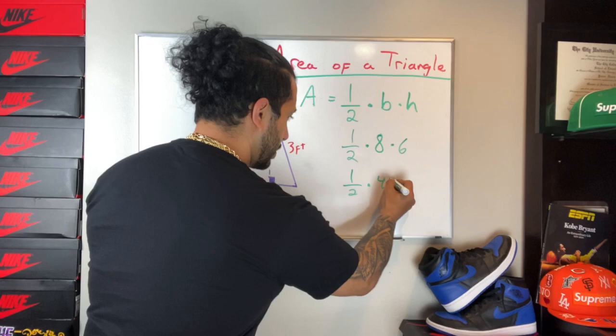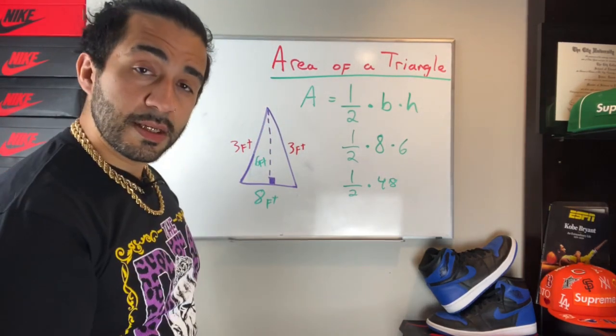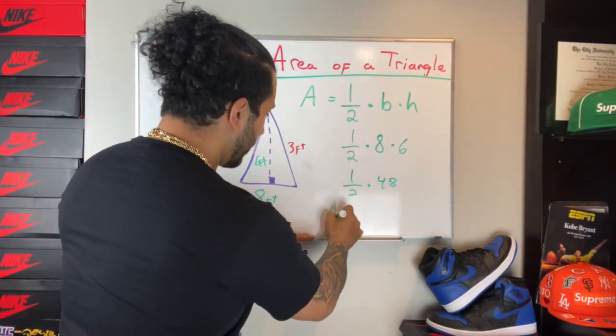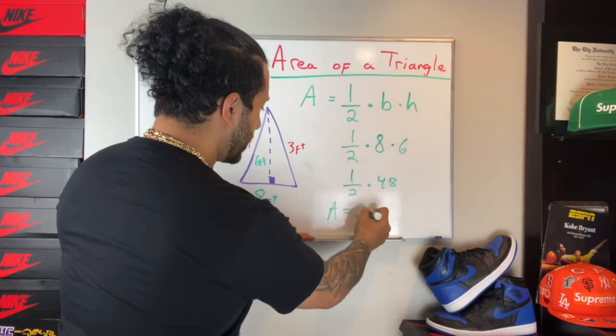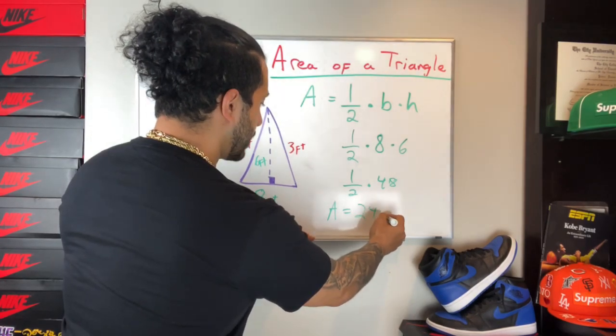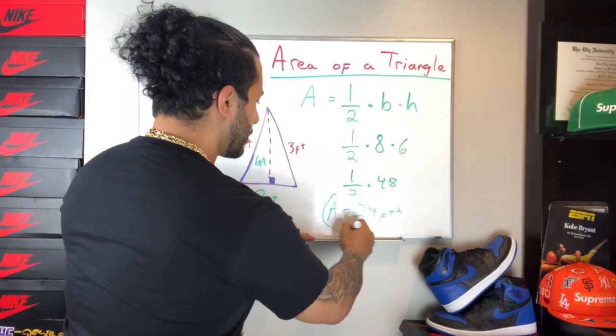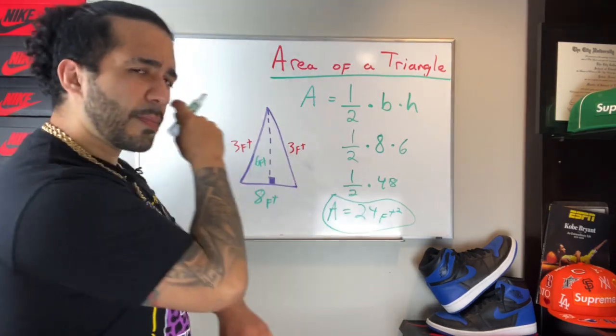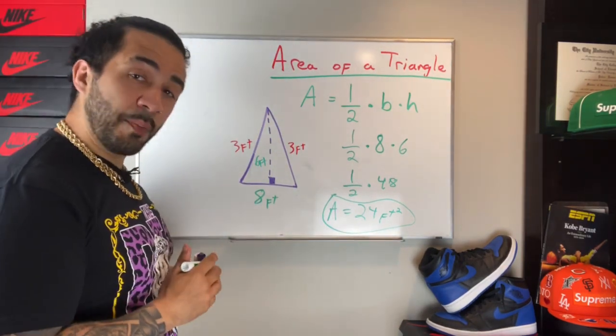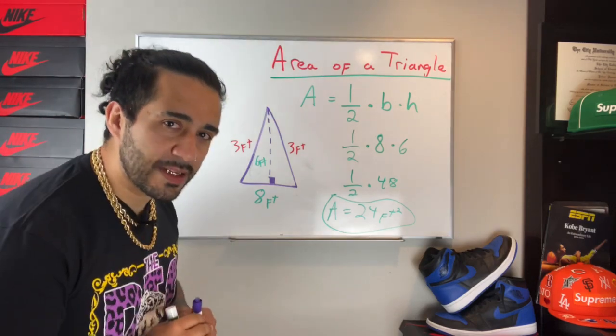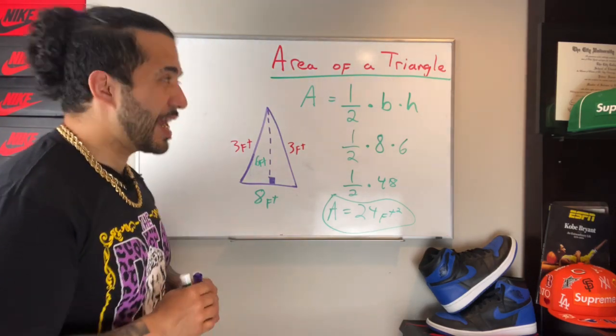48 times one half - the area is 24 feet squared. When you look at the big action triangle, there's some other numbers there. What I'm gonna do for you is a surprise. I told you the area of the triangle, now we're gonna calculate the perimeter.